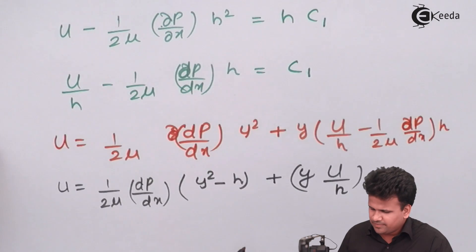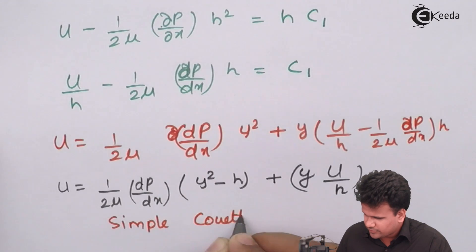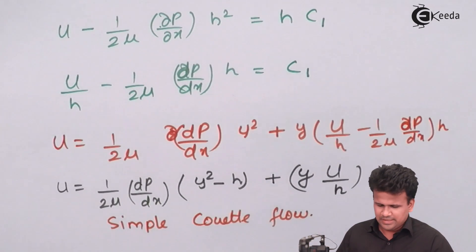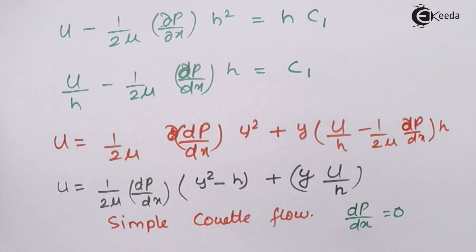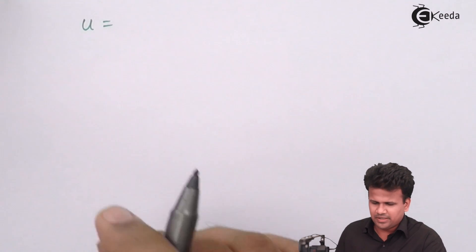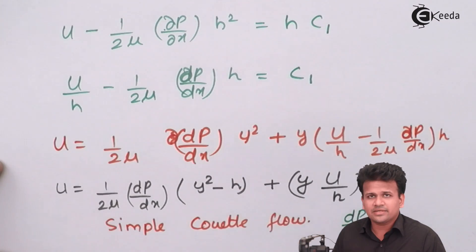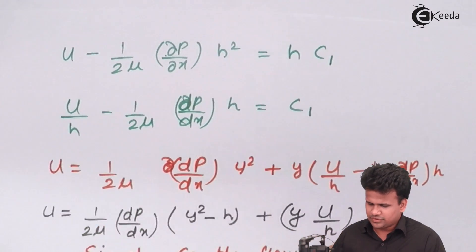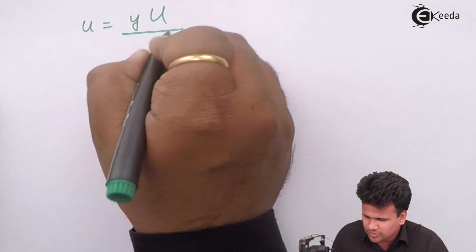For simple Couette flow, dp/dx = 0 — we do not consider the effect of pressure gradient. In that case, the entire (1/2μ)(dp/dx) term becomes 0, and the equation simplifies to: u = y·(U/h).